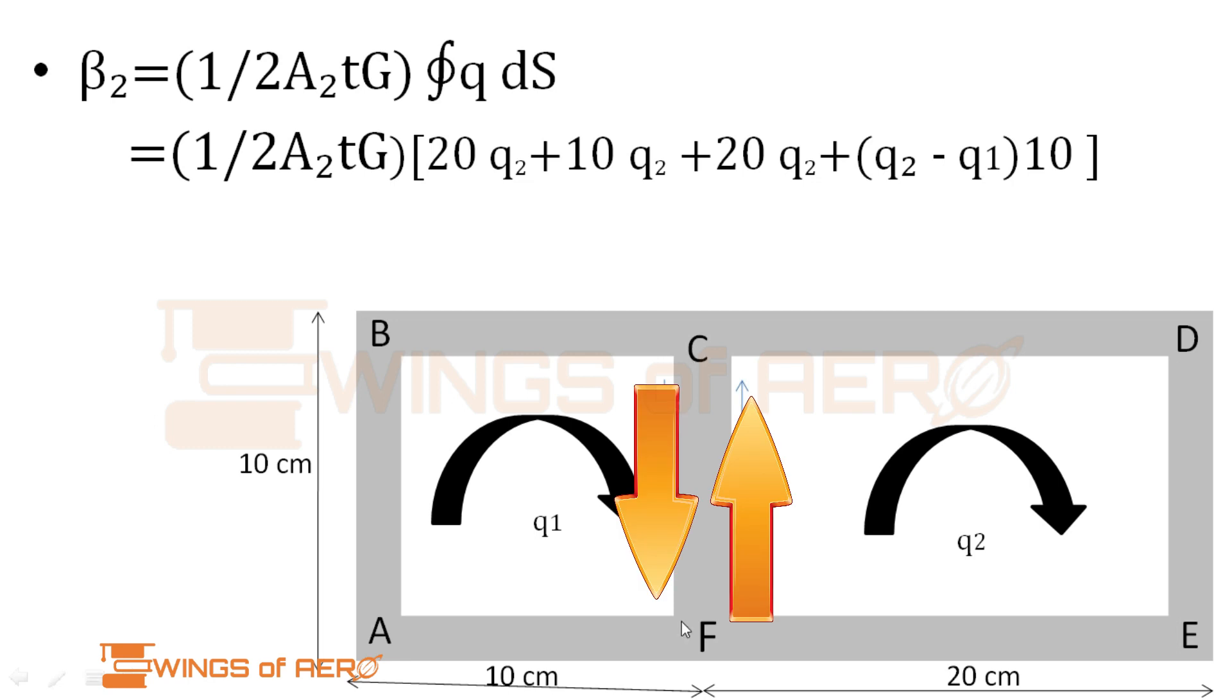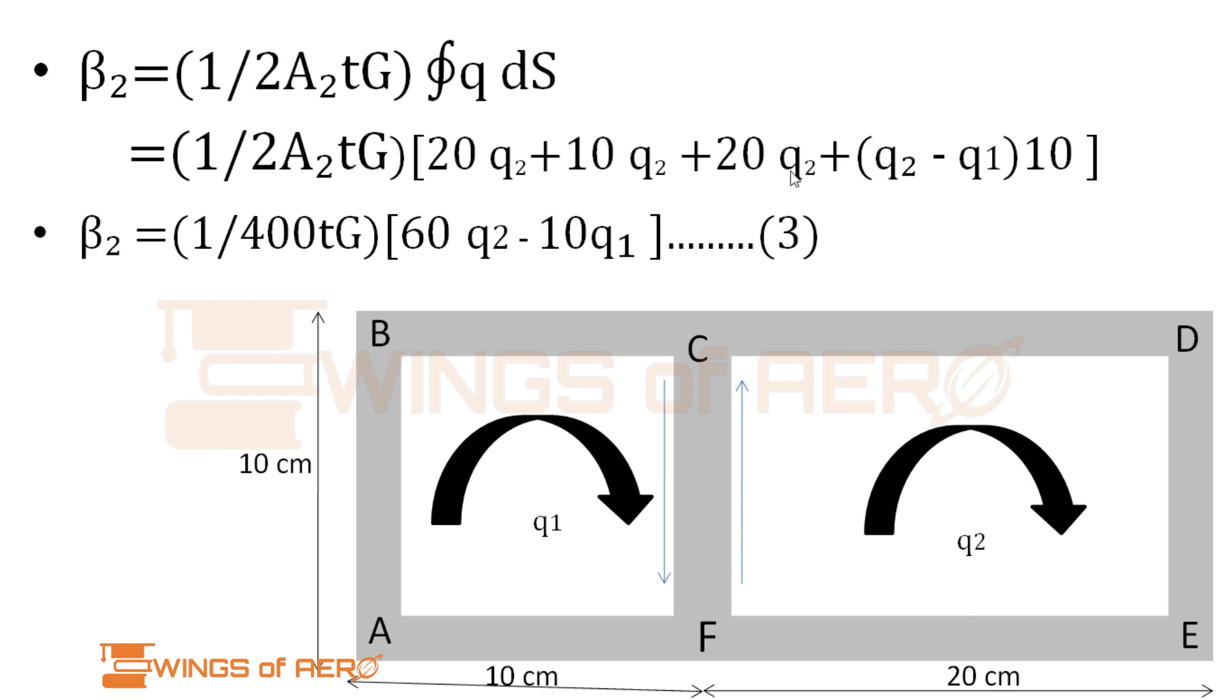For FC, we're finding with respect to cell 2, so we subtract: q2 minus q1, because CF is a common wall to both structures. When we're finding the twist per unit length, we focus on q2 with respect to q1, so q2 minus q1 into length 10. By simplification, applying the value of A2 equals 200, we get 1 by 400tG open bracket 60q2 minus 10q1. Name this as equation 3.